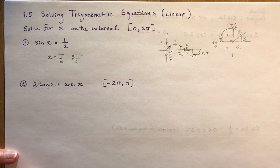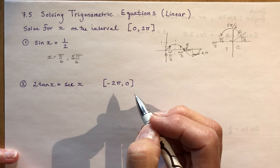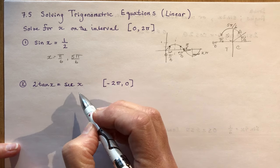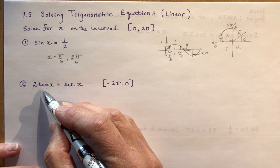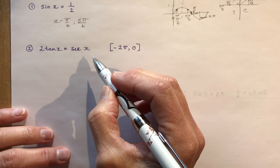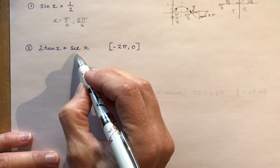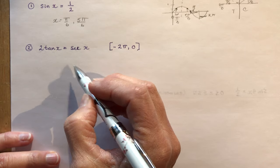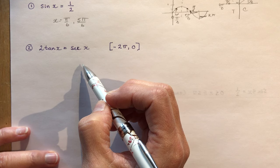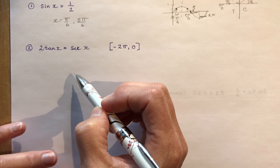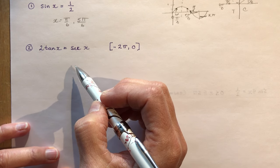So this one we have 2 tan x is equal to secant x. So when you're working with these equations, what you want to do is to move things to the other side of the equation. Because what you want to have here is you want to have a number on this side. You don't want something equals to another function. And you want to really, if you can, get it down to one function. Sometimes that's not just possible.